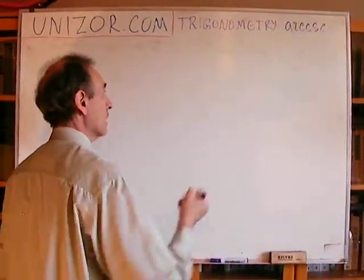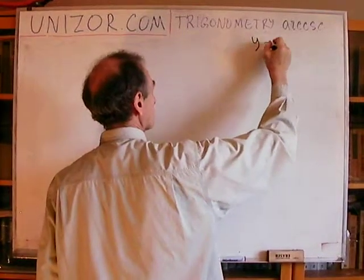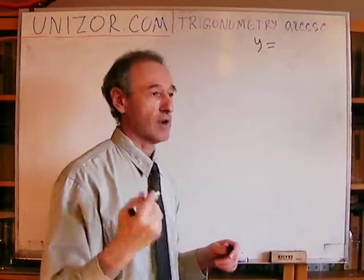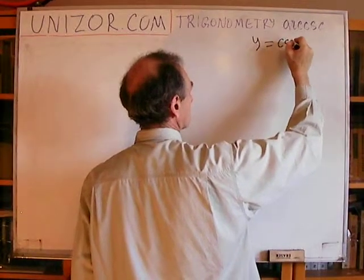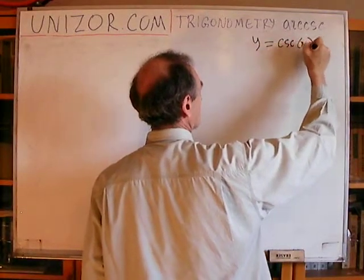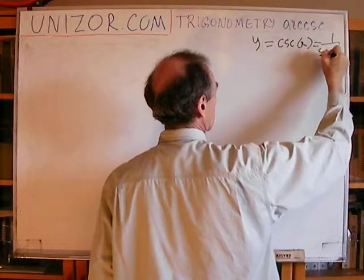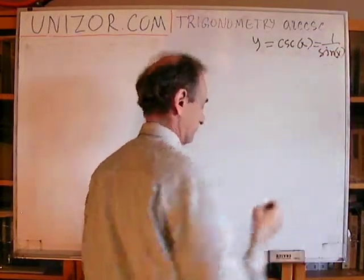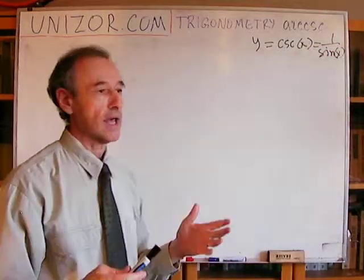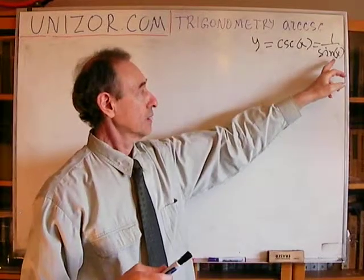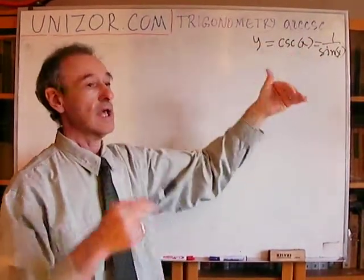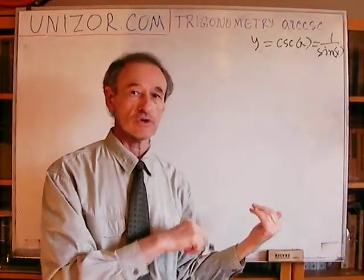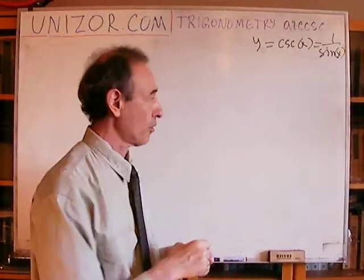So what is the cosecant? It's not really a direct definition. We usually define cosecant of x as 1 over sine of x. So what I would like to start is with a sine, then invert it to get the cosecant, and then go to inverse function to arc cosecant to get its properties.